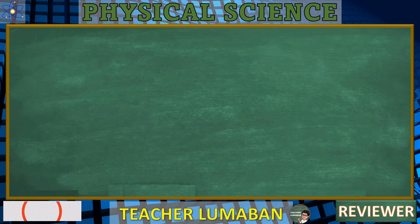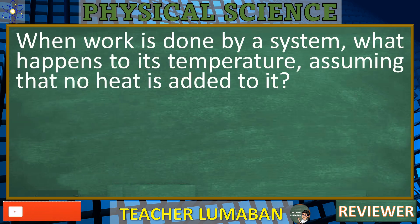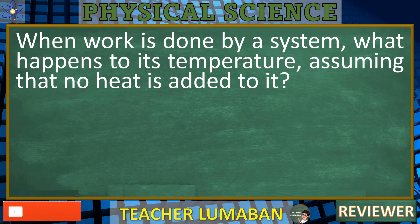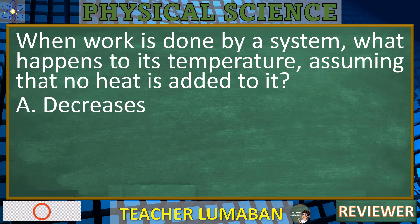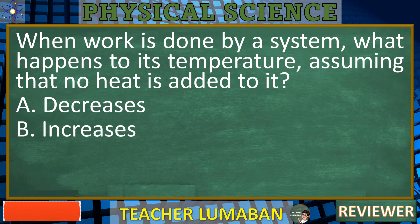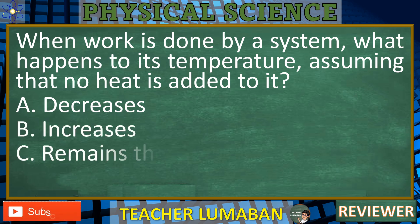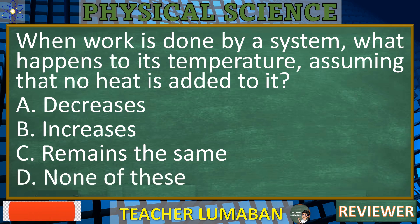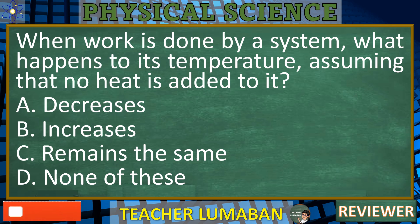When work is done by a system, what happens to its temperature, assuming that no heat is added to it? A. Decreases. B. Increases. C. Remains the same. D. None of these. In the next 5 seconds, select the best response from the available options.